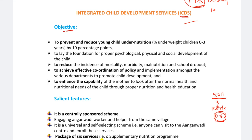So, what is the main objective? The first objective is to prevent and reduce young children under-nutrition - that is underweight children. And to lay the foundation for proper psychological, physical and social development of the child. And to reduce the incidence of mortality, morbidity, malnutrition and school dropout.